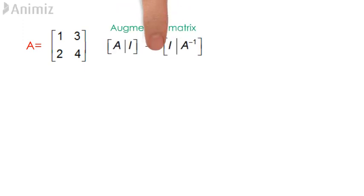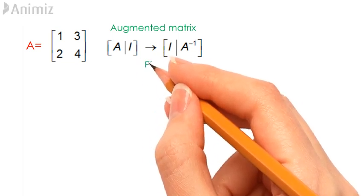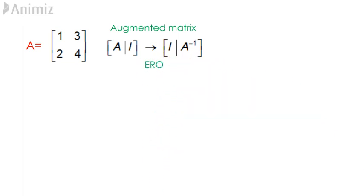We are going to find the inverse of the matrix containing the elements 1, 3, 2, 4 by using elementary row operations ERO. Let's call this matrix A. To execute the process, we first construct an augmented matrix in the form of AI. Our intention here is to use ERO to find the inverse of A going from AI to IA inverse.